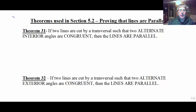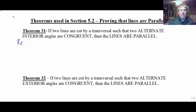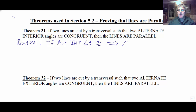You won't have to memorize the theorem numbers. We'll give you the reasons that you'll use in proofs, and we won't use the theorem numbers. But if two lines are cut by a transversal such that the two alternate interior angles are congruent, then the lines are parallel. So our reason in proof will be: alternate interior angles congruent implies parallel lines. That's all you really have to write.